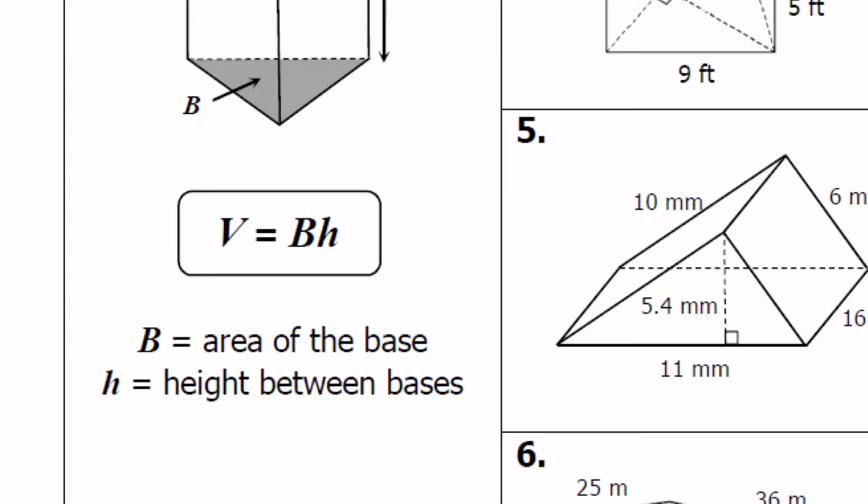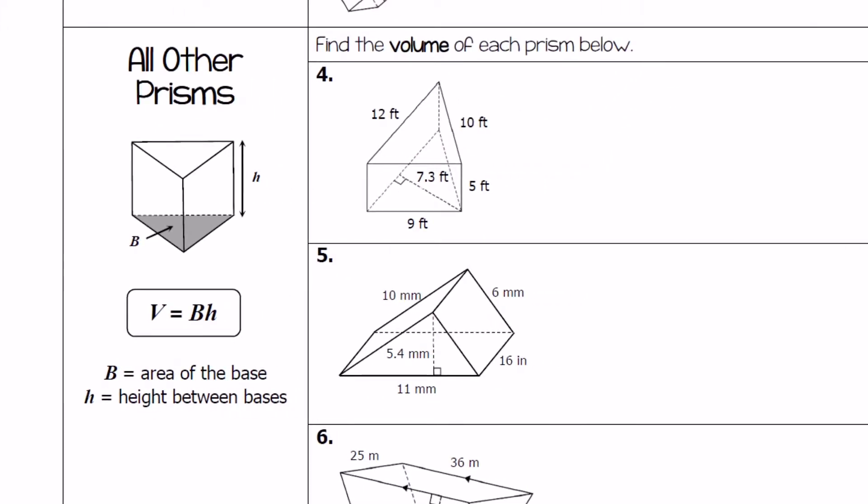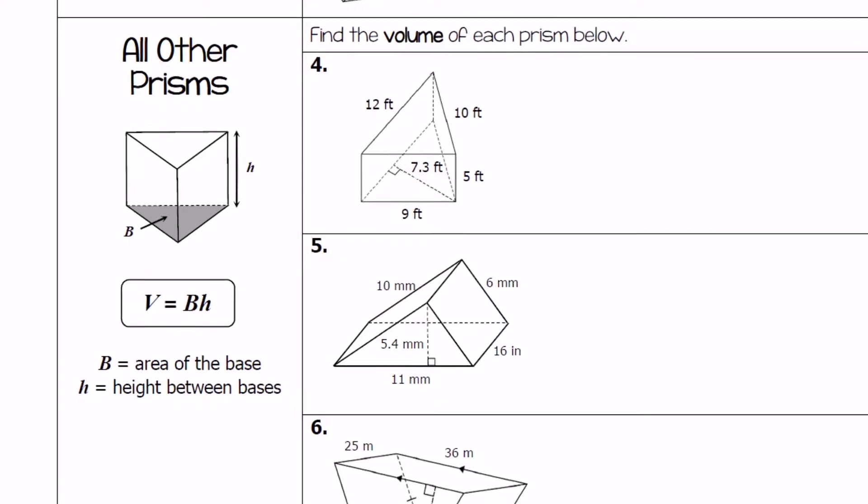So you're kind of finding the things you were finding with surface area except for you're not having to deal with like a lateral area. You're not having to deal with the perimeter of the base shape. You're not having to deal with any of that. You just need to find the B, like you were finding on surface area shapes, and then multiply that times that height between the bases. So the height of the prism, not the height of the base shape.